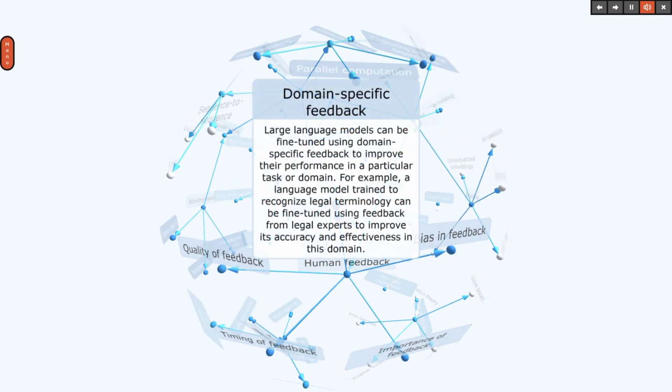Large language models can be fine-tuned using domain-specific feedback to improve their performance in a particular task or domain. For example, a language model trained to recognize legal terminology can be fine-tuned using feedback from legal experts to improve its accuracy and effectiveness in this domain.